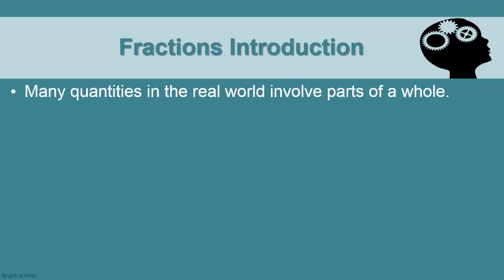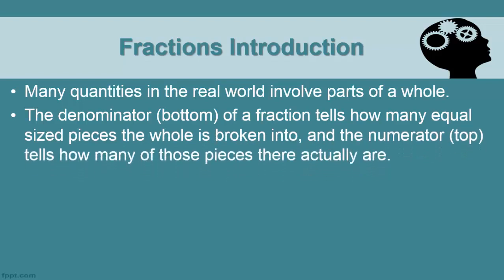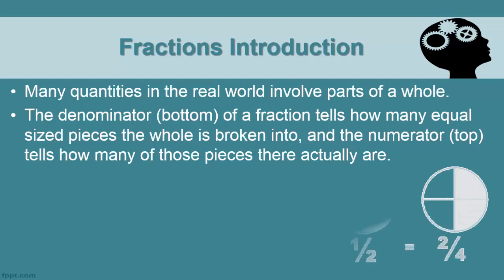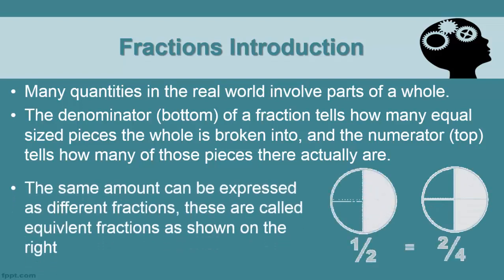Many quantities in the real world involve parts of a whole. The denominator — the bottom of a fraction — tells us how many equal-sized pieces the whole is broken into, and the numerator — the top — tells us how many of those pieces there actually are. The same amount can be expressed as different fractions; these are called equivalent fractions. For example, one-half can also be expressed as two-fourths, yet the same area is covered in the circle.